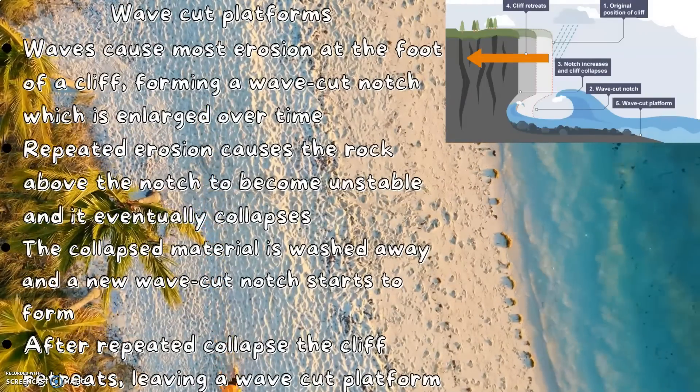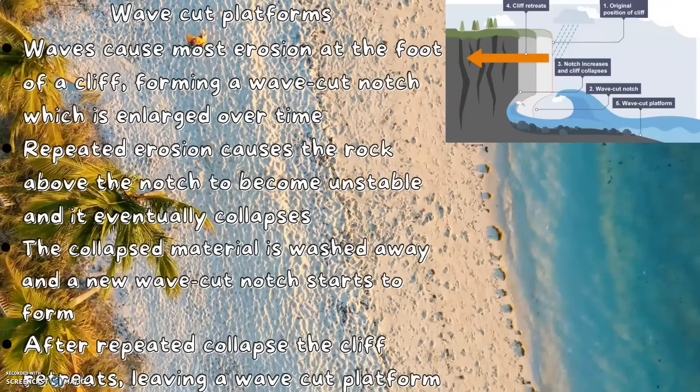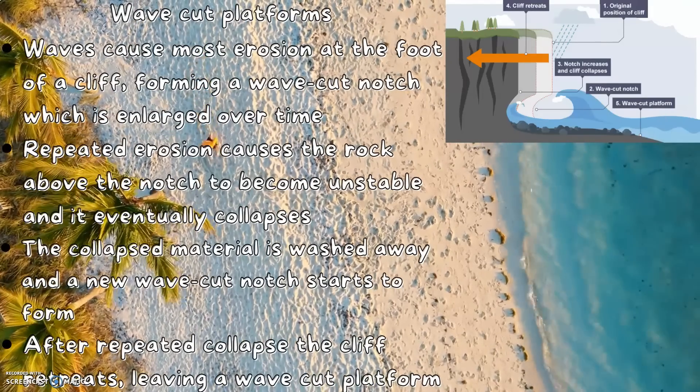After repeated collapse, the cliff retreats, leaving a wave cut platform.